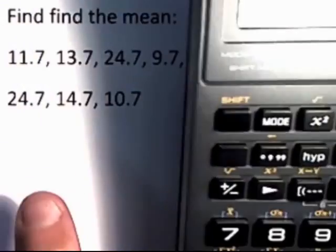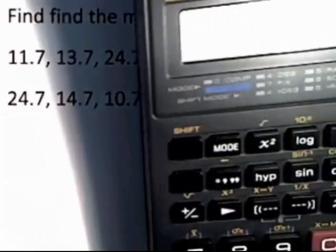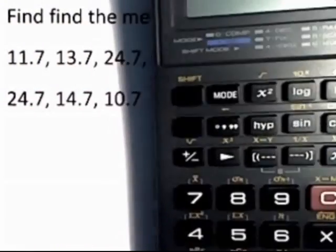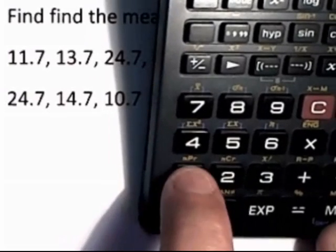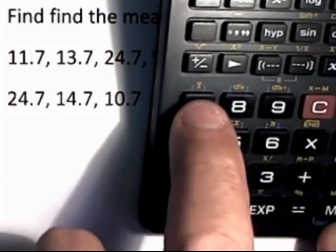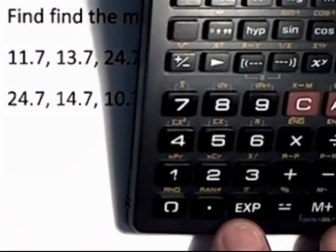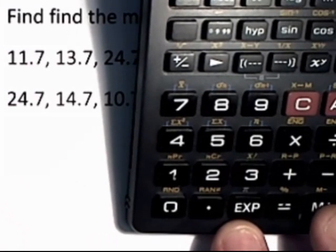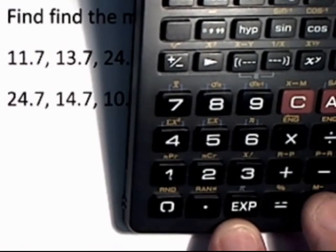What you do is take each one of them one at a time. So I'll do 11.7, and then you click the M plus, the memory add key, and that puts that data point into your set.